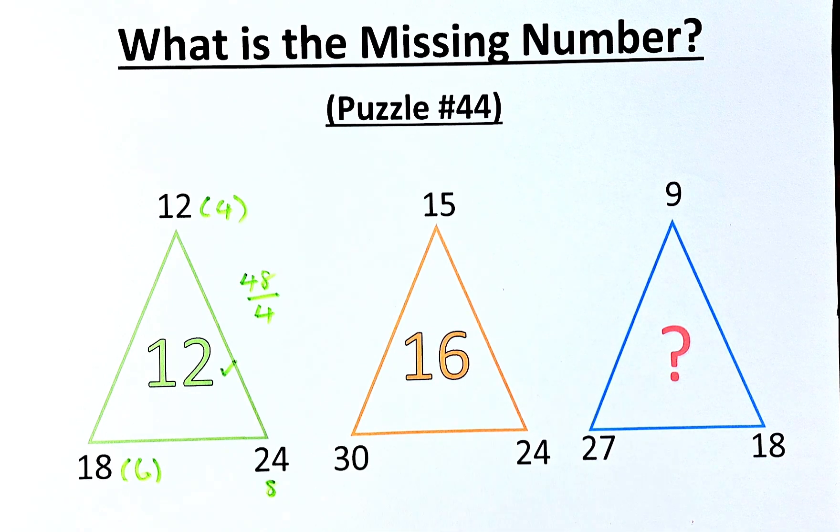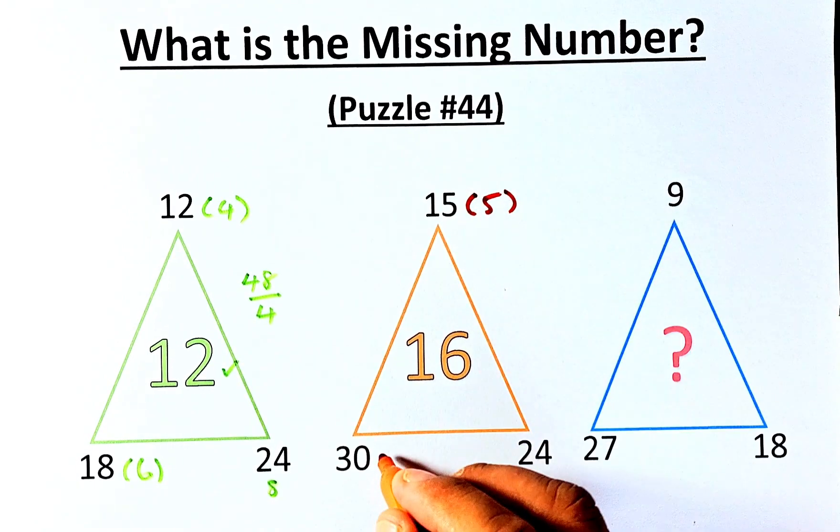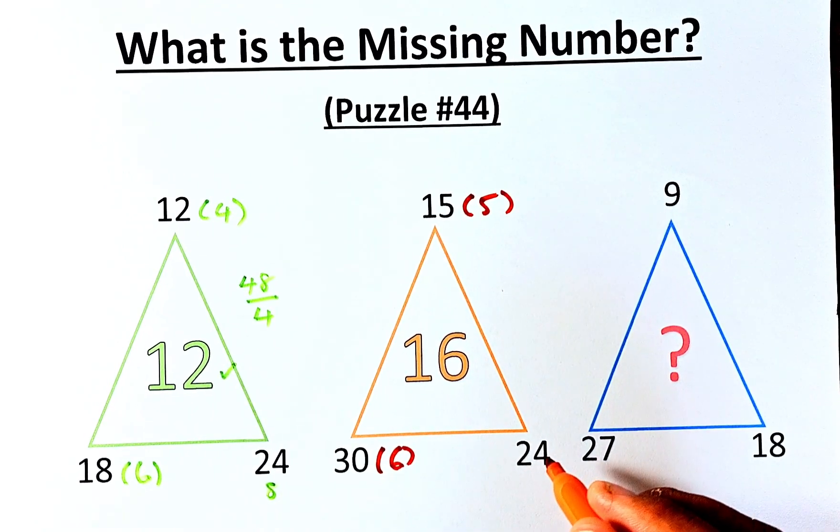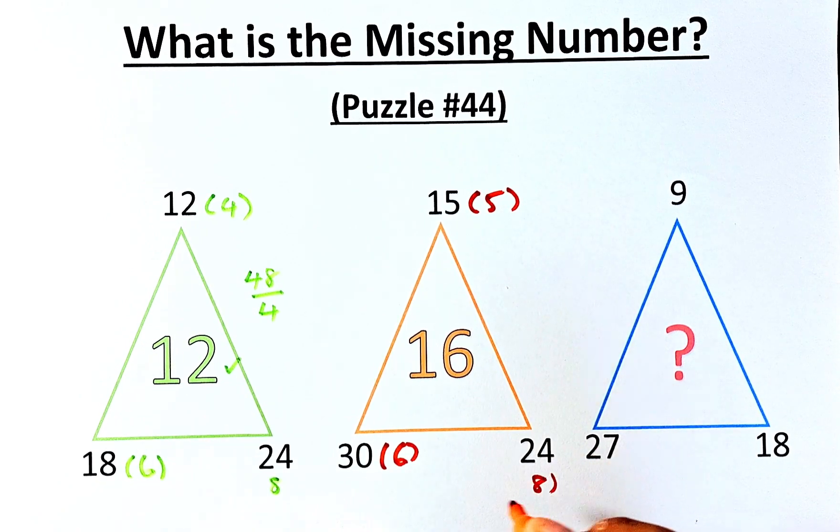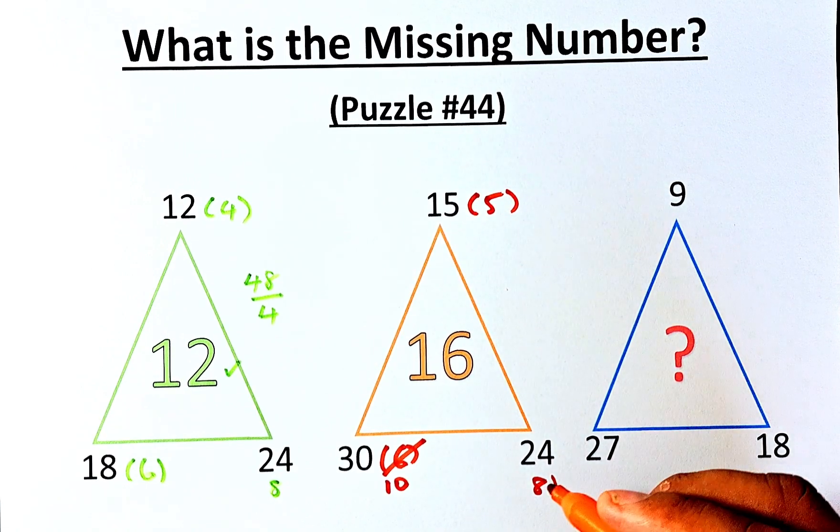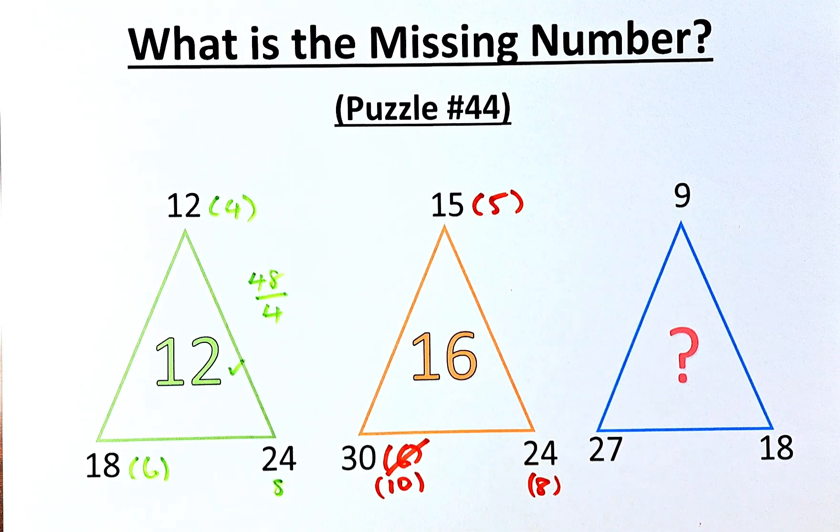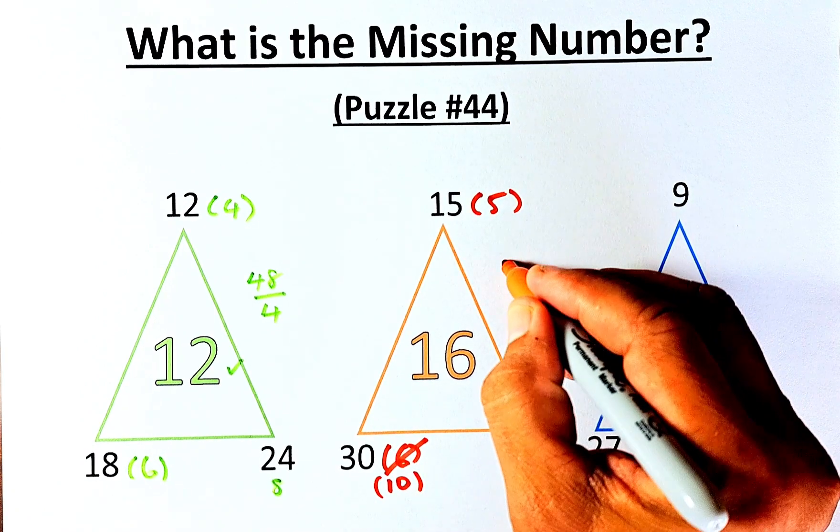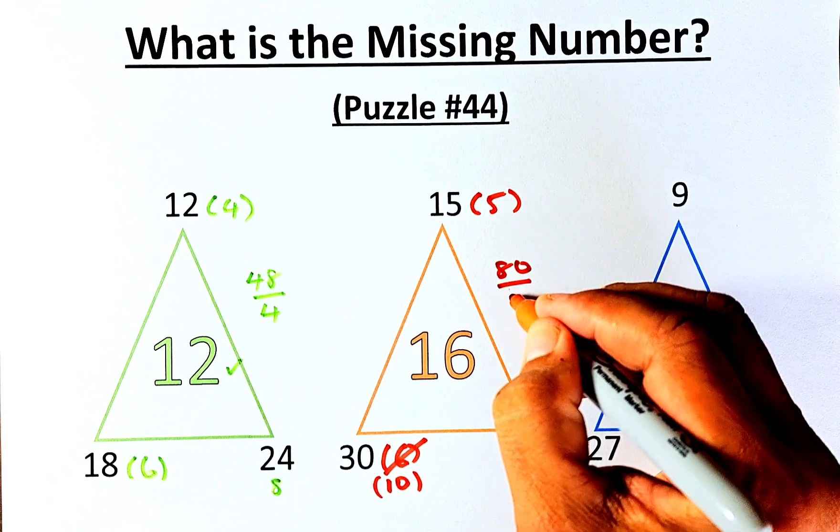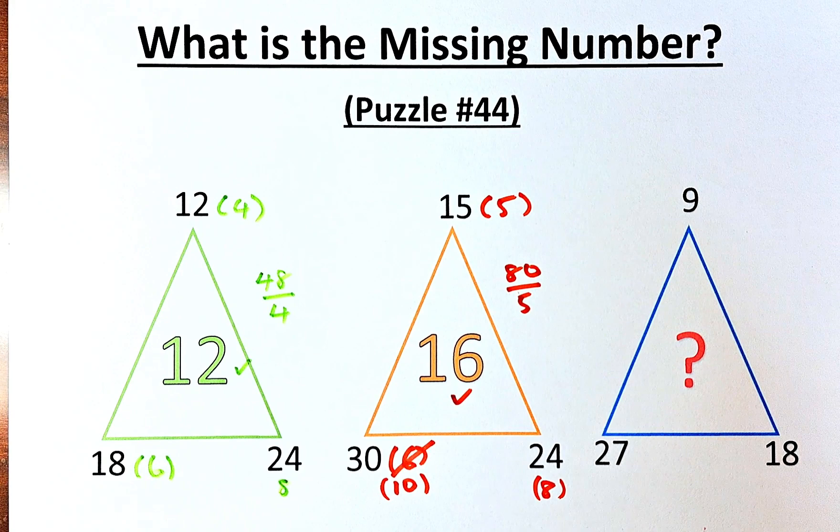In the second triangle, the orange triangle, we're going to do the same thing. We're going to divide every number by 3. So that becomes 5, that becomes 10, and that becomes 8. So the next step we're going to do is multiply the bottom numbers: 10 times 8 is going to be 80, divided by the top number, 5. 80 divided by 5, and that is how we get 16.